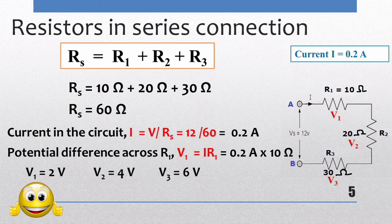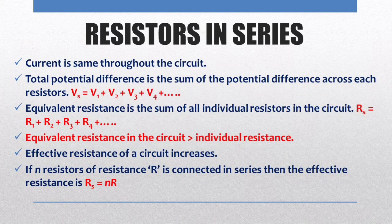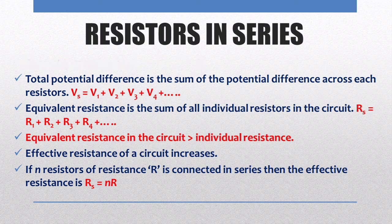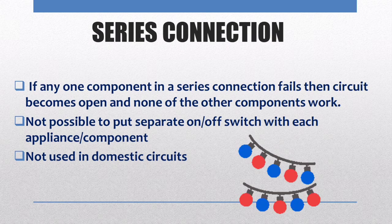In a series connection, current is the same throughout the circuit, but the potential difference across each resistor is different, so the total potential difference is the sum of individual potential differences. Equivalent resistance is found by adding all individual resistances and is always greater than any individual resistance. In series connection it is not possible to separately switch appliances on and off, so it cannot be used in domestic circuits. Decorative LED fancy bulbs are an example of a series combination.